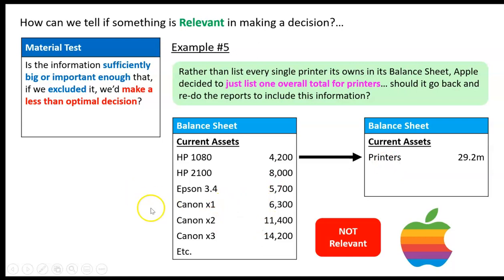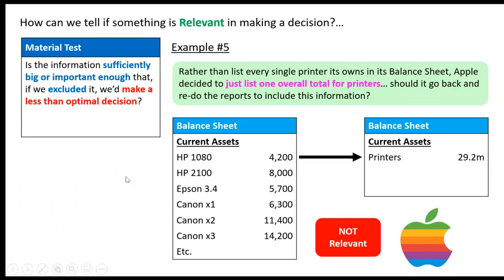To summarize: materiality is about whether a piece of information is big enough or important enough that if we excluded it, we'd make a less than optimal decision. Most of the time, excluding the fact that Apple owns a specific Epson printer for a small amount won't make our decision worse — we've got the overall total. It's all about the amount, but there's no fixed dollar figure. It depends on context: is the business Apple, a big multinational with billions in assets, or a local florist with only tens of thousands? It's all about context and the overall impact on decision-making.